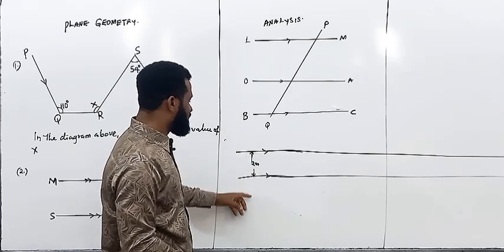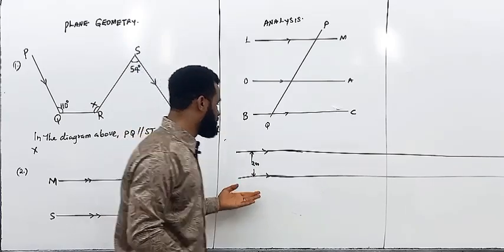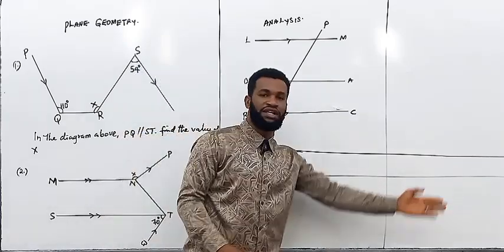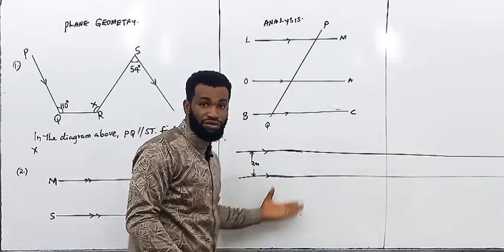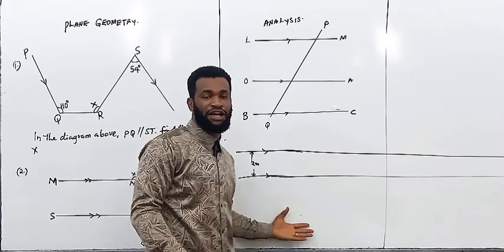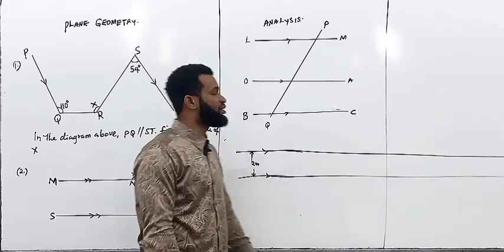That is what we mean by parallel lines. It's not only two lines that can be parallel — another line can also be parallel in the same way, like two meters away from each other.